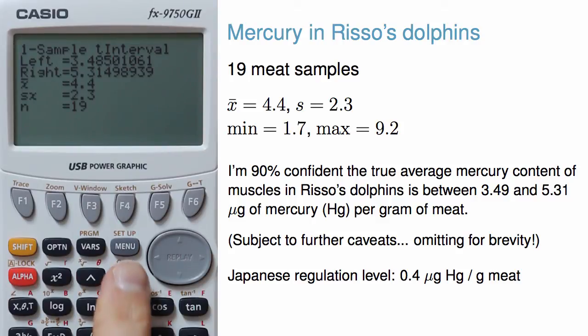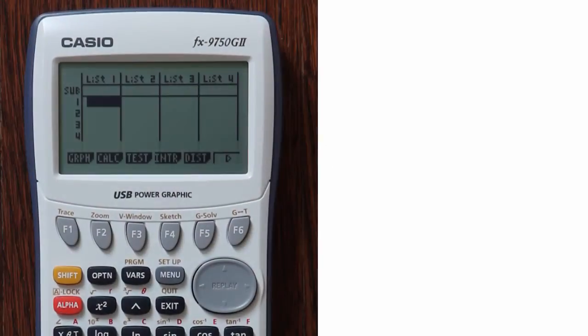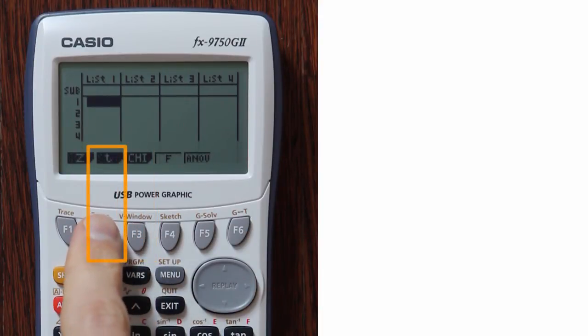Now that I've completed the confidence interval, I can exit out to the main stat page. Had I instead wanted to run a hypothesis test, I could have, instead of choosing Enter, chosen Test for hypothesis test. I again would select T and 1S.